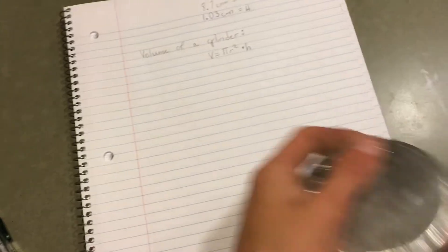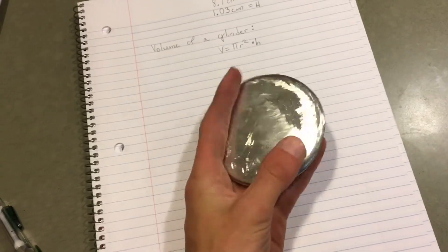Hi everyone, I'm going to be showing you how to find the volume of a circular metallic piece of metal, or really anything that's this shape.